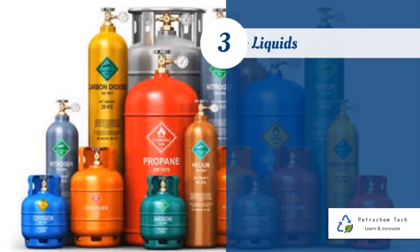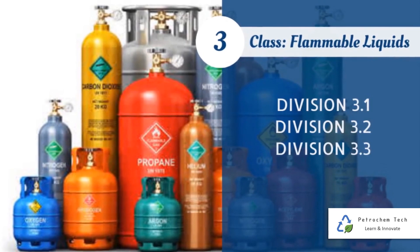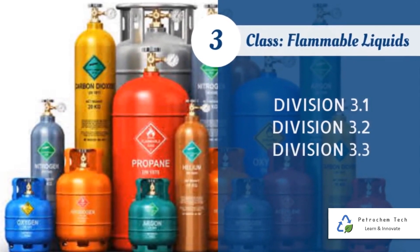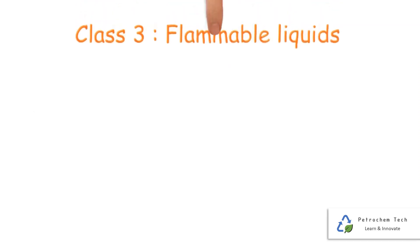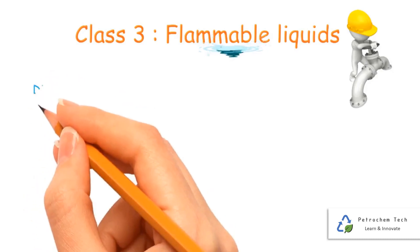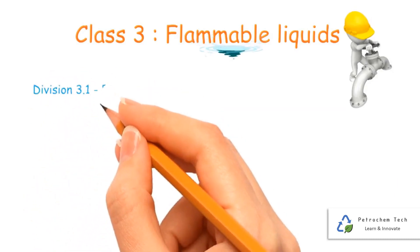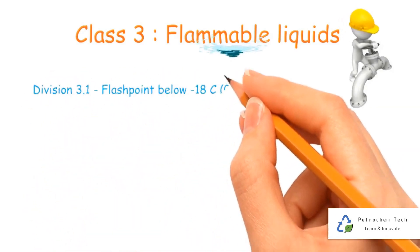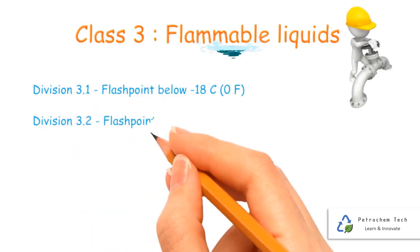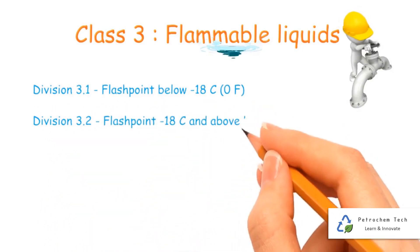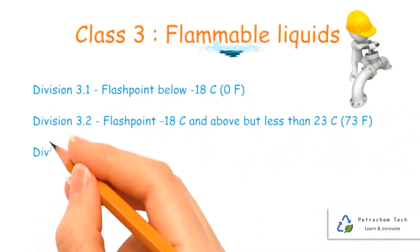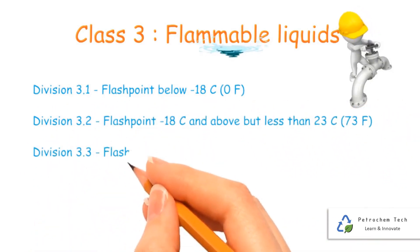Class 3 - Flammable Liquids, consisting of three divisions. A flammable liquid is a combustible liquid which can be easily ignited in air at ambient temperatures; that is, it has a flash point at or below nominal threshold temperatures.